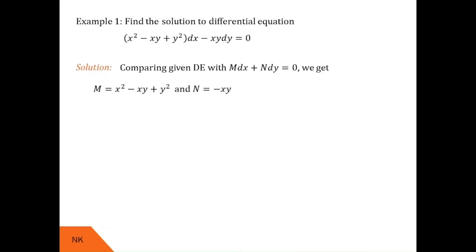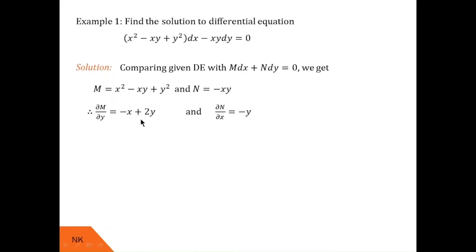Now let us calculate ∂M/∂y and ∂N/∂x. Since M is x² − xy + y², ∂M/∂y will be −x + 2y, and ∂N/∂x will be only −y. Since these expressions are not the same, we say ∂M/∂y is not equal to ∂N/∂x, and hence the given differential equation is not an exact differential equation.